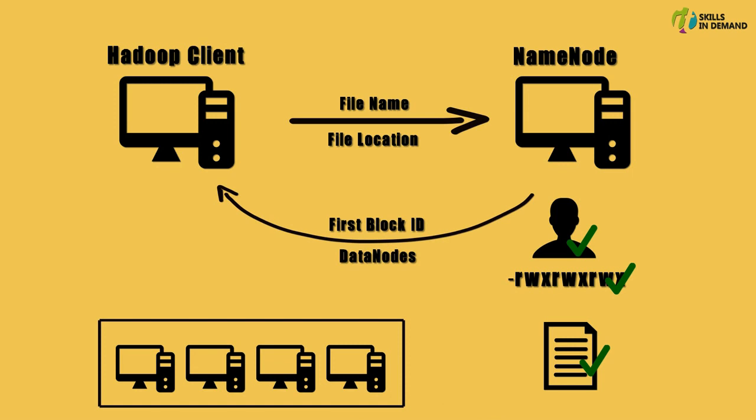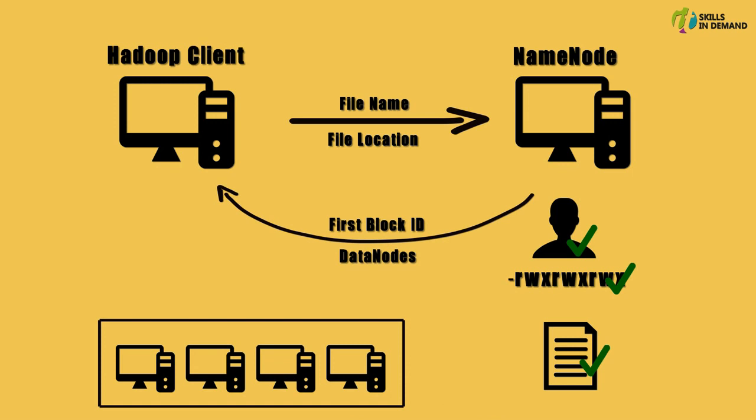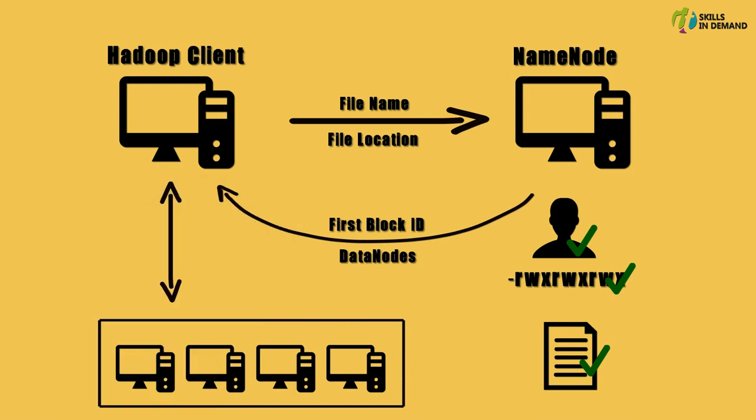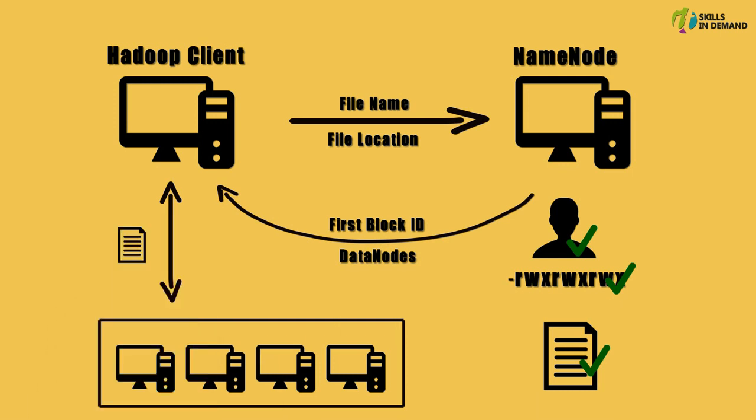Since the client has all the data related to the file it is looking for, it can contact the data node directly and read the data from it. The process of reading data from the data node keeps repeating until all the data blocks of the requested file have been retrieved, or the client cancels this process by closing the stream.